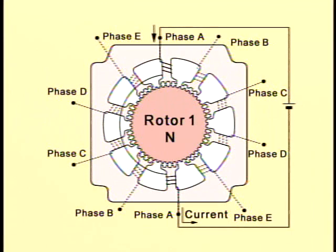First, when a direct current is switched on in phase A, the south pole is magnetized by the right-hand screw rule.